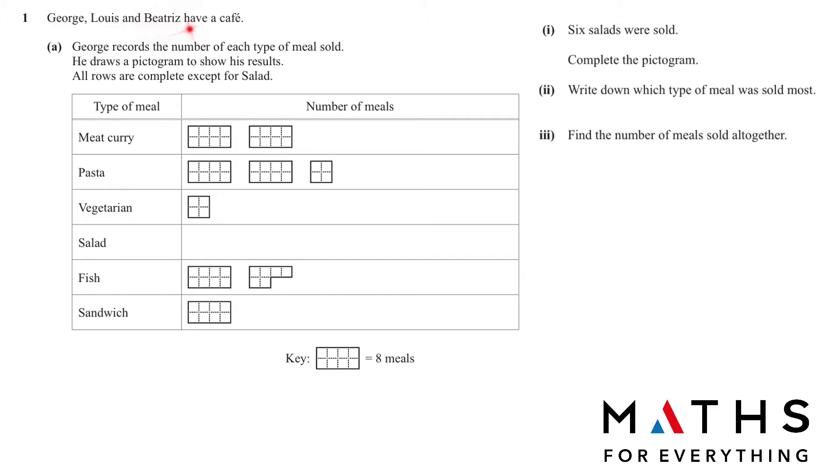George, Lewis, and Beatrice have a cafe. George records the number of each type of meal sold. He draws a pictogram to show his results. All rows are complete except for salad. The key is this one rectangular with eight squares is equal to eight meals. This means that one rectangle equals to one meal. Six salads were sold, complete the pictogram. So six salads means we will have six boxes, one two three four five six.